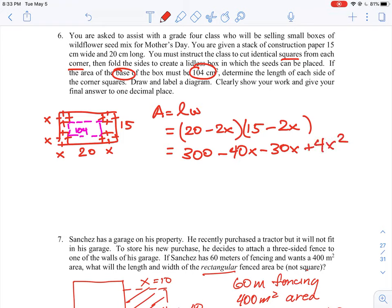So that's going to give us our value for the area and we do know that it's equal to 104. So there's our equation. We just need to collect like terms and then solve for x.